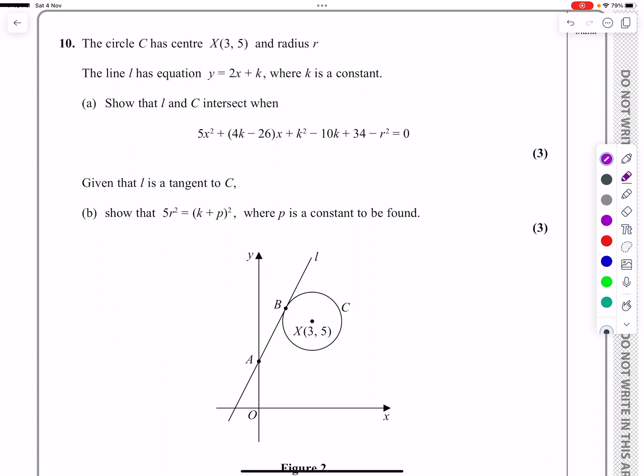So we've got a circle C, which is center (3, 5) and radius r. And we've got a straight line y = 2x + k, where k is a constant. Well, if that's a straight line, then I know the intercept here is going to be k there. I might need that a little bit later on.